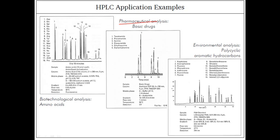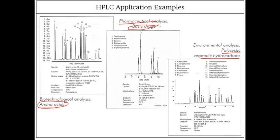HPLC is used for pharmaceutical purposes such as identifying basic drugs and distinguishing amino acid sequences. Thalassemia testing can also be done using HPLC. In environmental analysis, polycyclic aromatic hydrocarbon (PAH) analysis can be performed. It can also monitor organic compound contamination in water — a higher presence of organic compounds indicates a higher biological oxygen demand and more contaminated water.